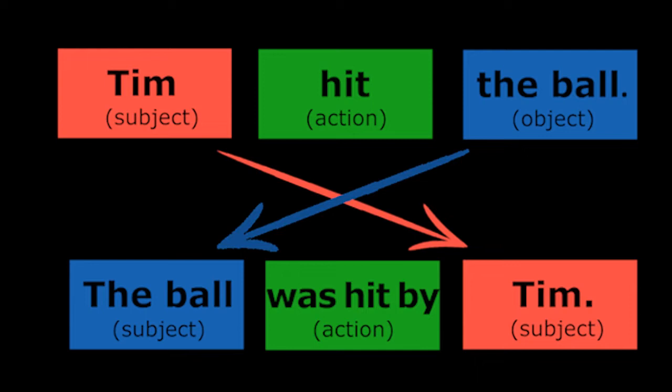For example: Ravana was killed. The passive verb forms used are: is/am/are plus V3, was/were plus V3, was/were plus been plus V3, or being plus V3.